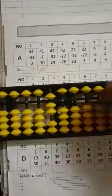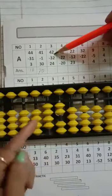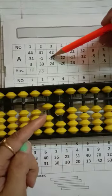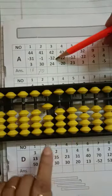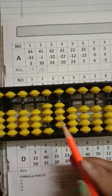So now, question number 3. Is 42 minus 30? Yes, minus 2. Then add is 20. Then add is 4. Your answer will be 34.